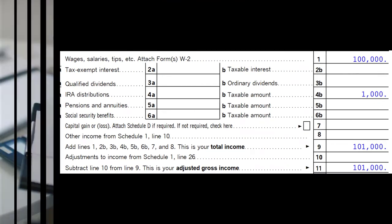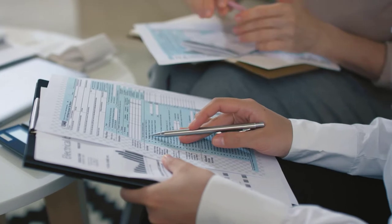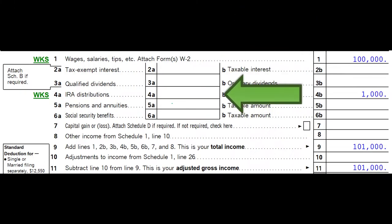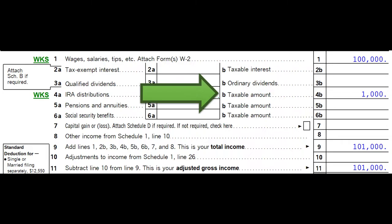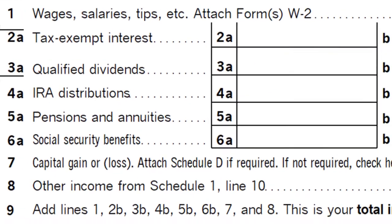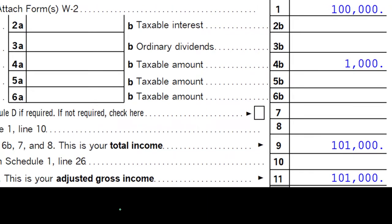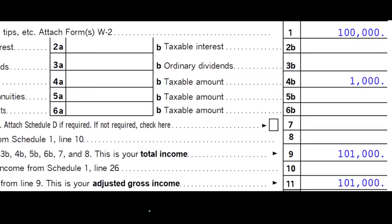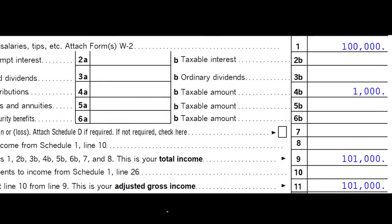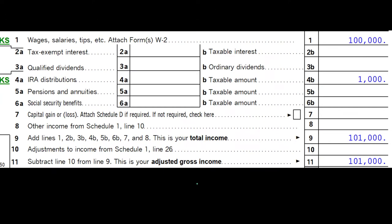This is the first page of the 1040. We're focused here on 4A IRA Distributions and 4B, which is the taxable amount of the IRA distributions. When thinking about IRAs, we have two sides with tax implications: us putting money into individual retirement accounts — which is a tax benefit — basically through our working career, for example.